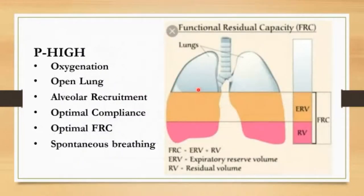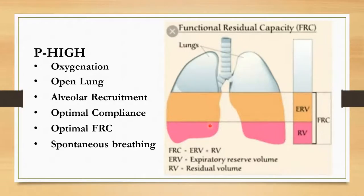You don't want to go too high with your P-high. The P-high is how you improve oxygenation — this is an open lung concept where you splint the lung open and do these brief releases as fast as possible so there's minimal movement in the lung. This creates alveolar recruitment, optimal compliance, and optimal FRC while encouraging the patient to breathe spontaneously.